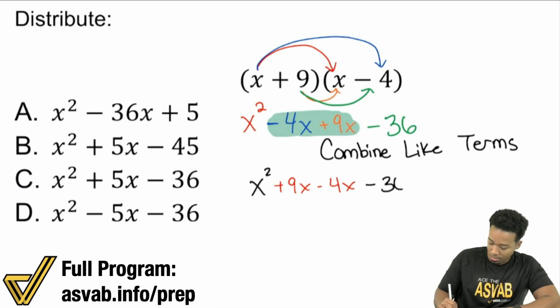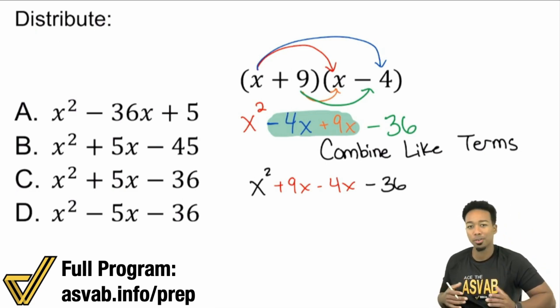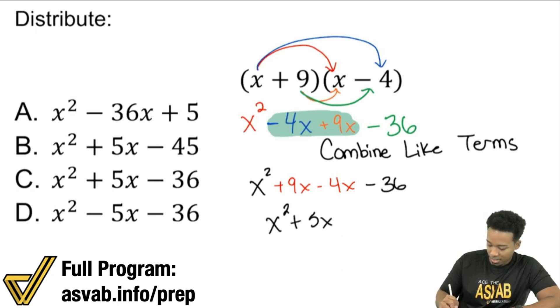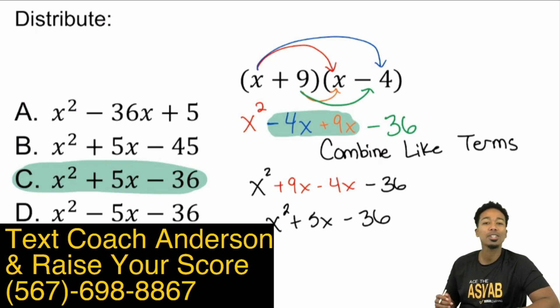And so 9 minus 4 is going to give us 5. And so our answer here will be x squared plus 5x minus 36, making answer choice C, the correct answer. Just like that. Please don't forget to like and comment on this video. Let me know what your thoughts are. If I helped you out, let me know. I'll see you guys later.